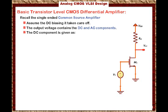VOUT1 equals VDD minus ID times RD. Watch out for the logic here: if the transistor is on, the drain current flows down through RD. By Ohm's law, there is a voltage drop across RD, so the output voltage equals VDD minus that voltage drop, which is ID times RD, where ID here is the DC current. This intuition is very important for analog engineers.